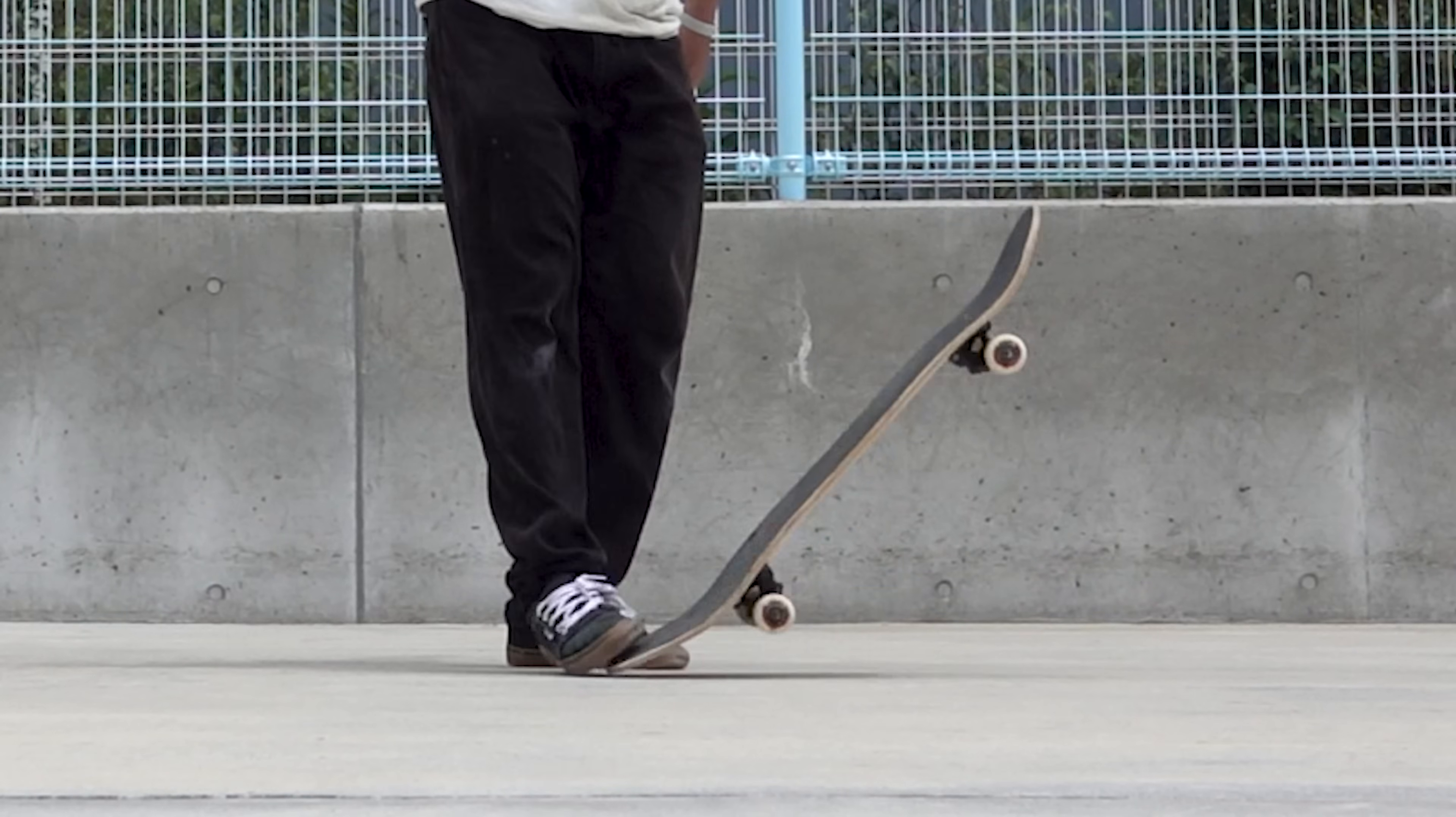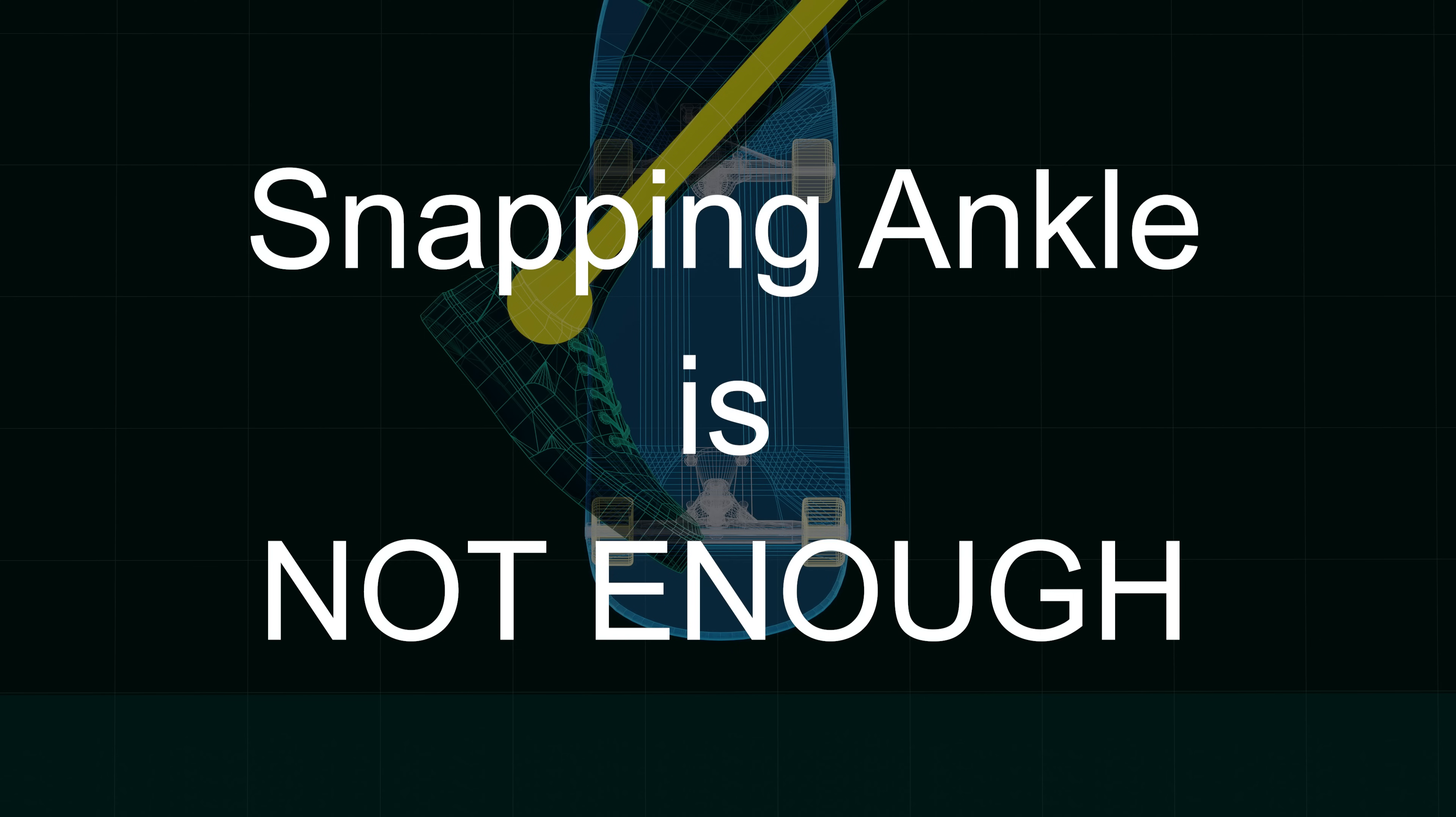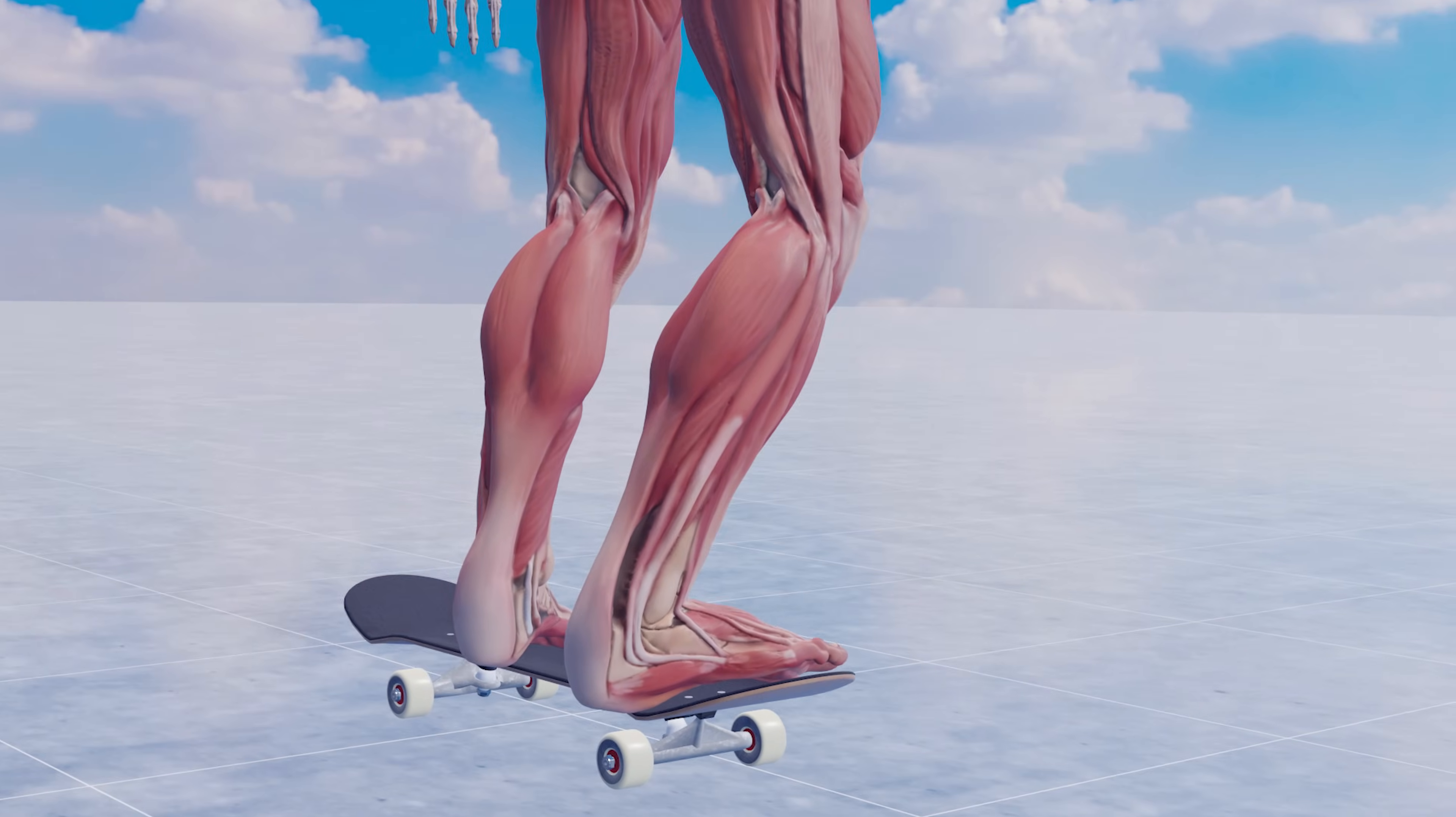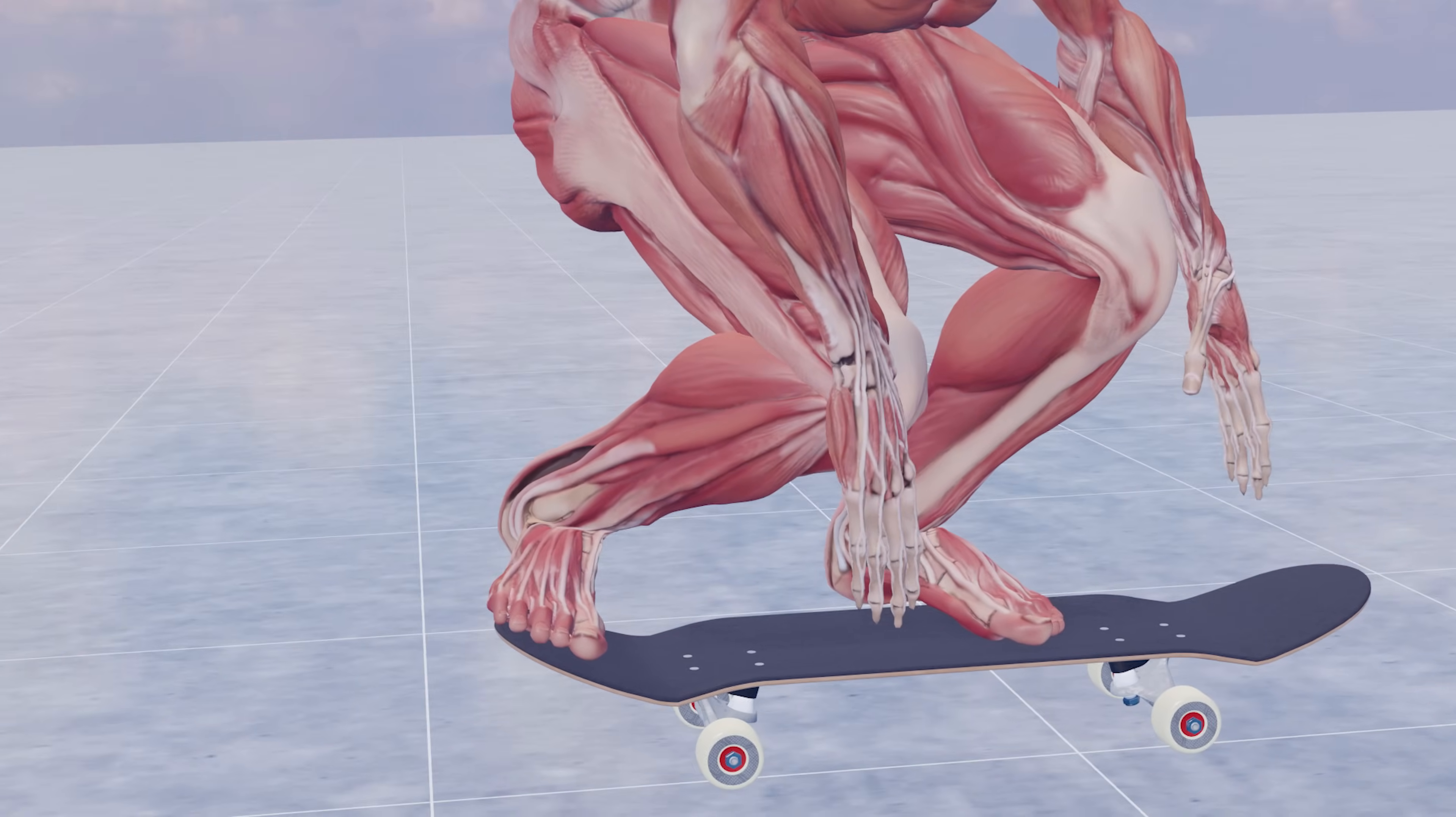Finally, let's consider the motion of popping. It is often said that you need to snap your ankle, but that alone is not enough. The calf muscle is generally too small to lift the entire body weight. While the body weight is pressing down on the board, the body will not rise no matter how hard you pop.